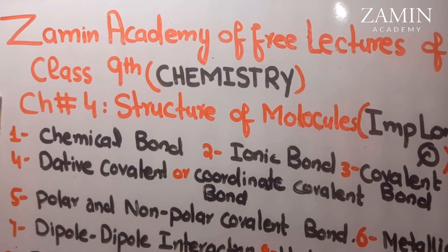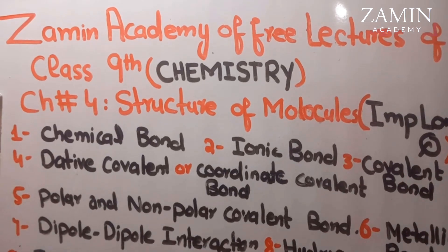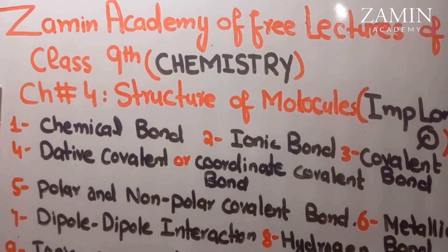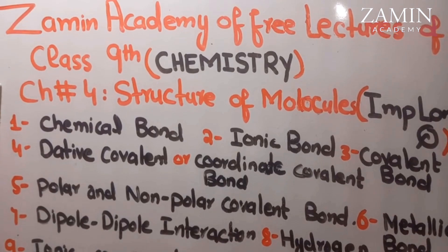Let's see which important long questions we have. The first long question is about chemical bonds — what are chemical bonds, how many chemical bonds, and which types of chemical bonds. After that, we will go into detail of chemical bonds.